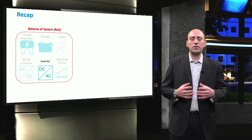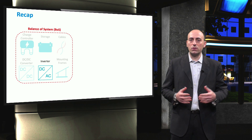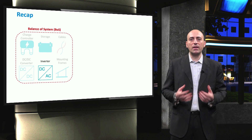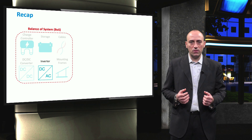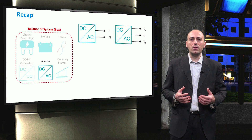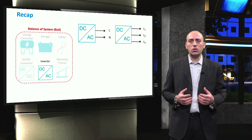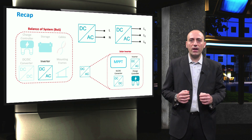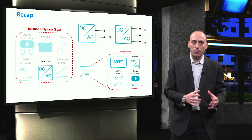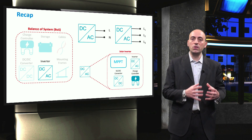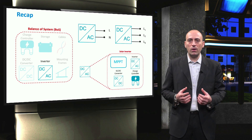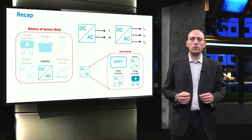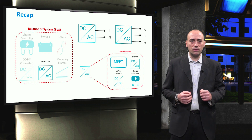Let's now recap what we have seen in this video. First of all, the inverter belongs to that part of the PV system which is called the balance of system, or BOS. Then we went through the main characteristics that every inverter shows. Also, we saw that depending on the size of the system and the application, a choice has to be made between a single-phase and tri-phase inverter. Finally, we clarified that the word inverter can refer either to the power conversion section that modifies the signal from DC to AC, or to the overall power electronic device that includes also other components. In the next video, we are going to see how the inverter is used in different types of PV system configurations.